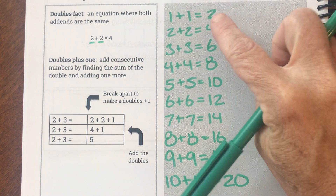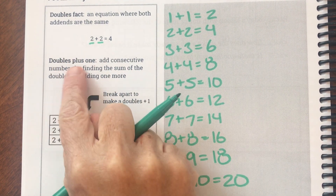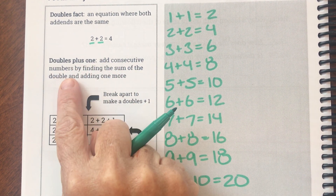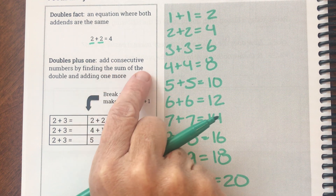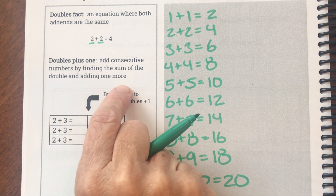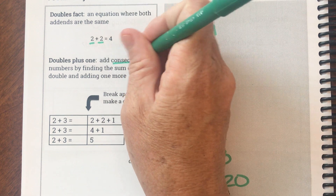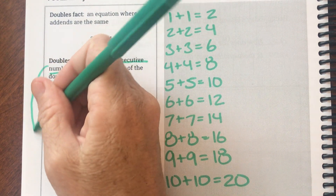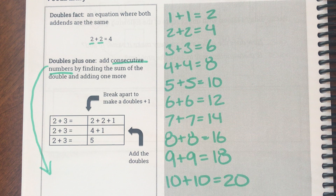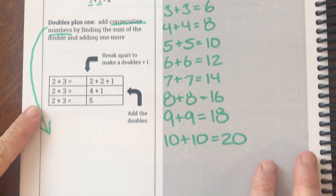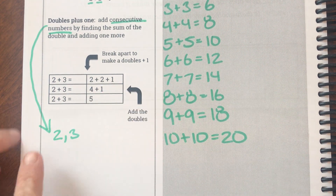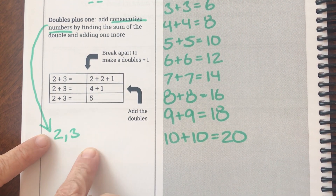We're going to use doubles facts, but then we're going to use something called doubles plus one. It says: add consecutive numbers by finding the sum of the double and adding one. What does consecutive numbers mean? Consecutive means next to each other. In our example, the consecutive numbers are two and three, because if I count — one, two, three — two and three are next to each other.